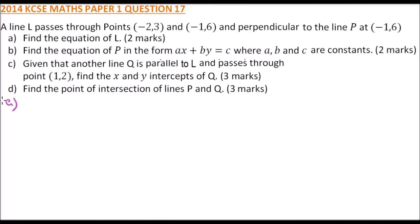For the equation of L, first of all we calculate the gradient. Gradient of L equals (6 minus 3) divided by (−1 minus −2). That changes to positive, so we have 3 divided by 1, which equals 3. So that is the gradient.